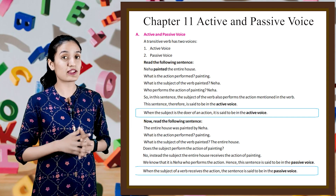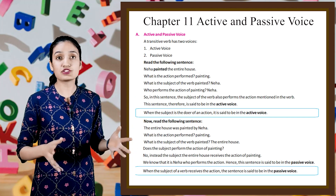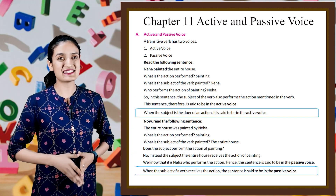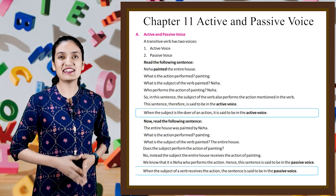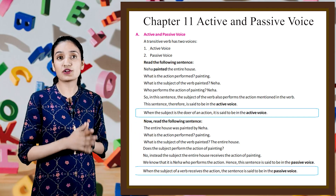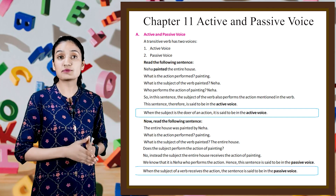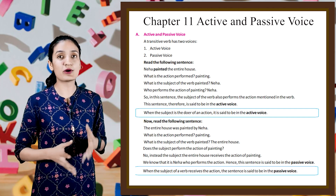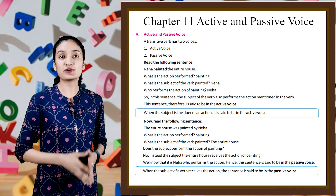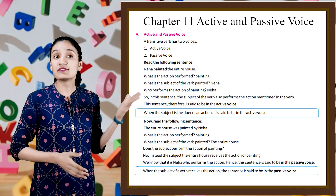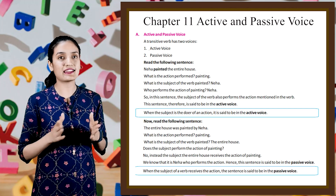Now kids, read the following sentences. Neha painted the entire house. What is the action performed? Painting. What is the subject of the verb 'painted'? Yes, you guessed it right — it's Neha. Who performs the action of painting? It's also Neha. So in this sentence, the subject of the verb also performs the action mentioned in the verb. This sentence therefore is said to be in the active voice. When the subject is the doer of an action, it is said to be in the active voice.